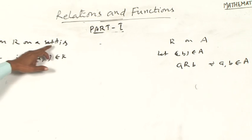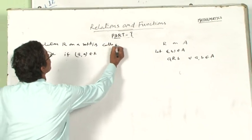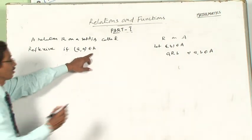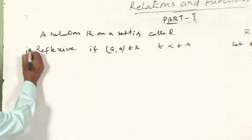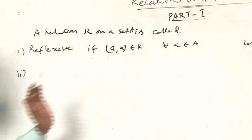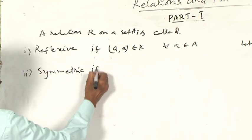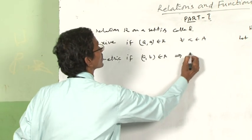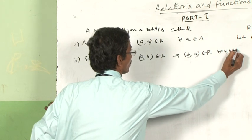A relation R on a set A is called reflexive if the ordered pair A comma A belongs to R, for every A belonging to A. A relation R on a set A is called symmetric if A comma B belongs to R implies B comma A belongs to R, for every A comma B belonging to A.